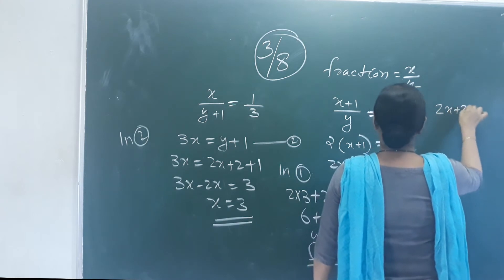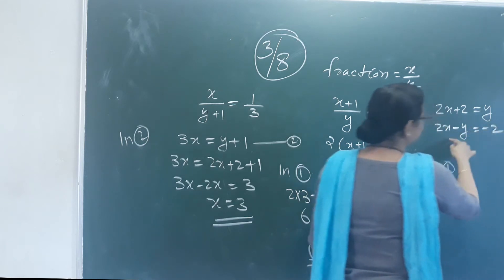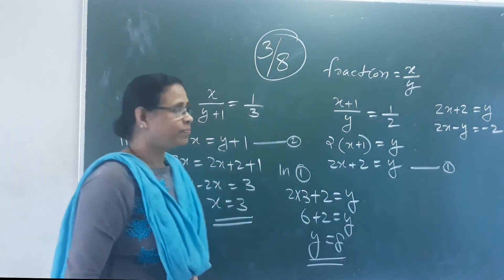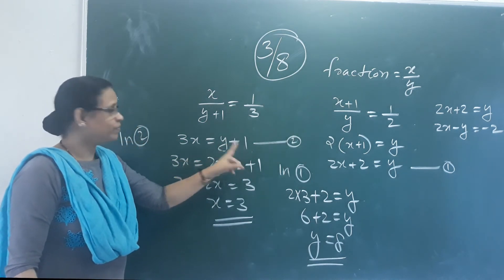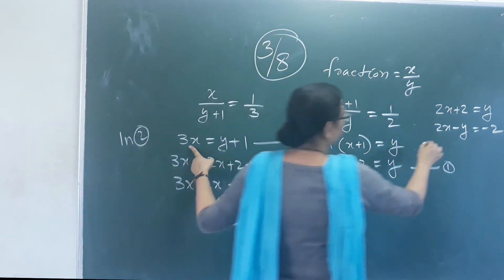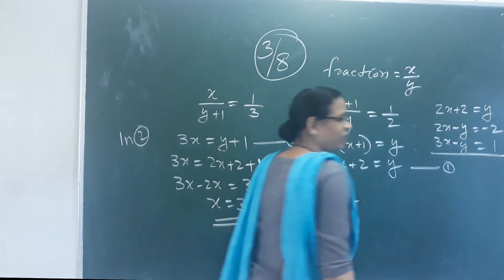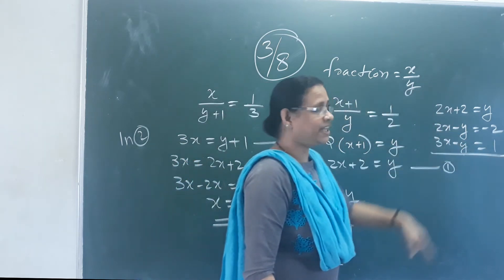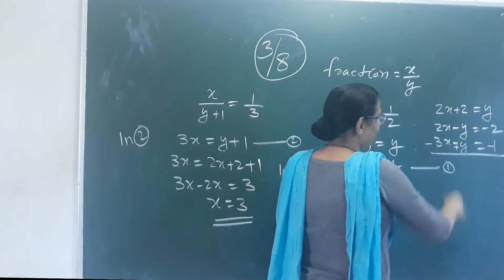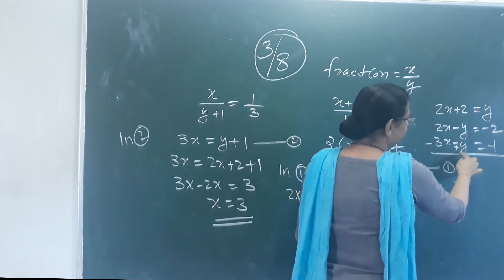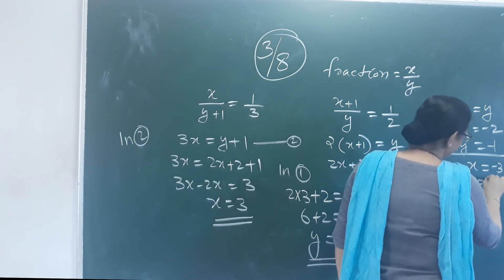Cross multiplying: 2X plus 2 equals Y, so 2X minus Y equals minus 2. From Equation 2: 3X minus Y equals 1. Adding and sign-changing: minus X equals minus 3, so X equals 3.